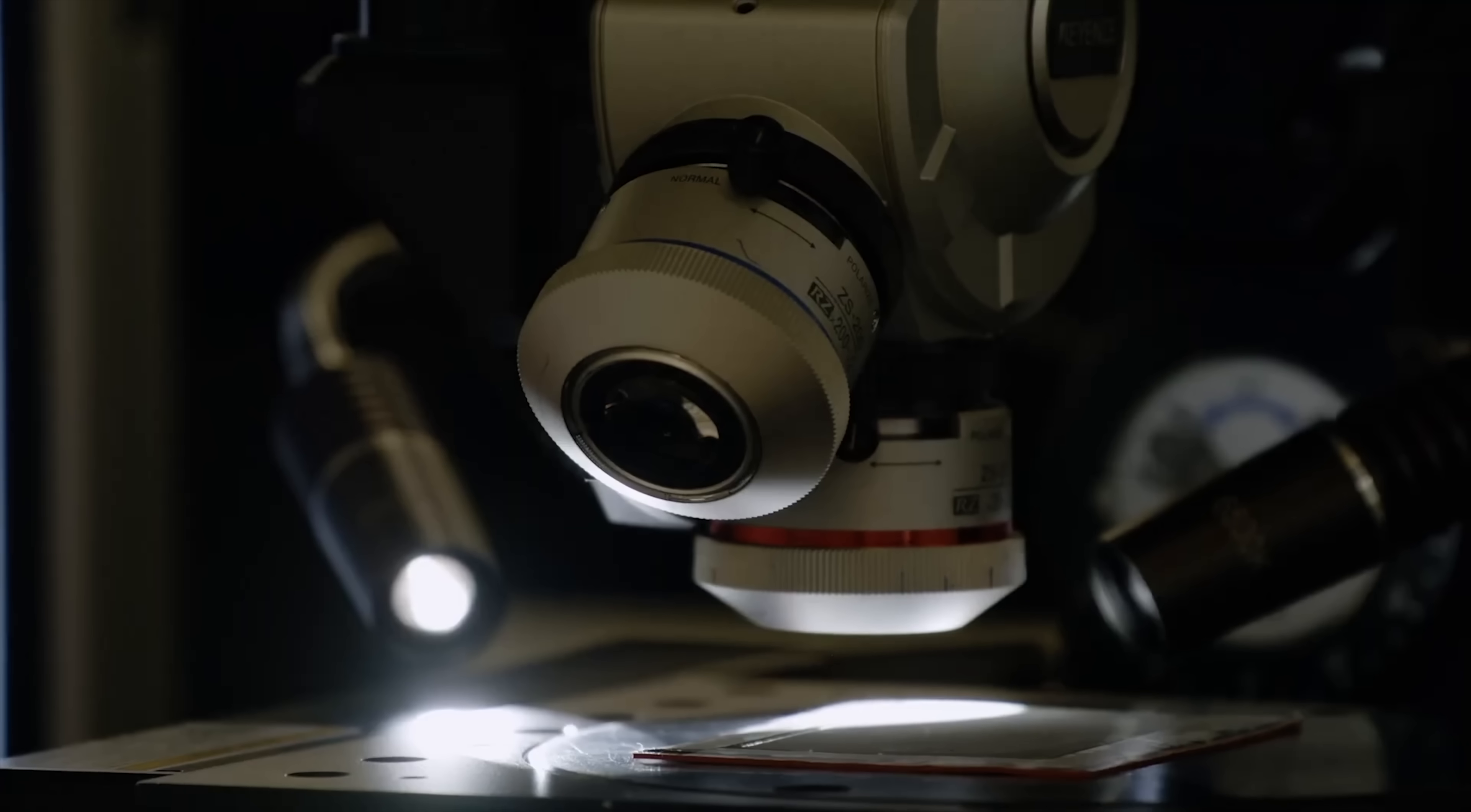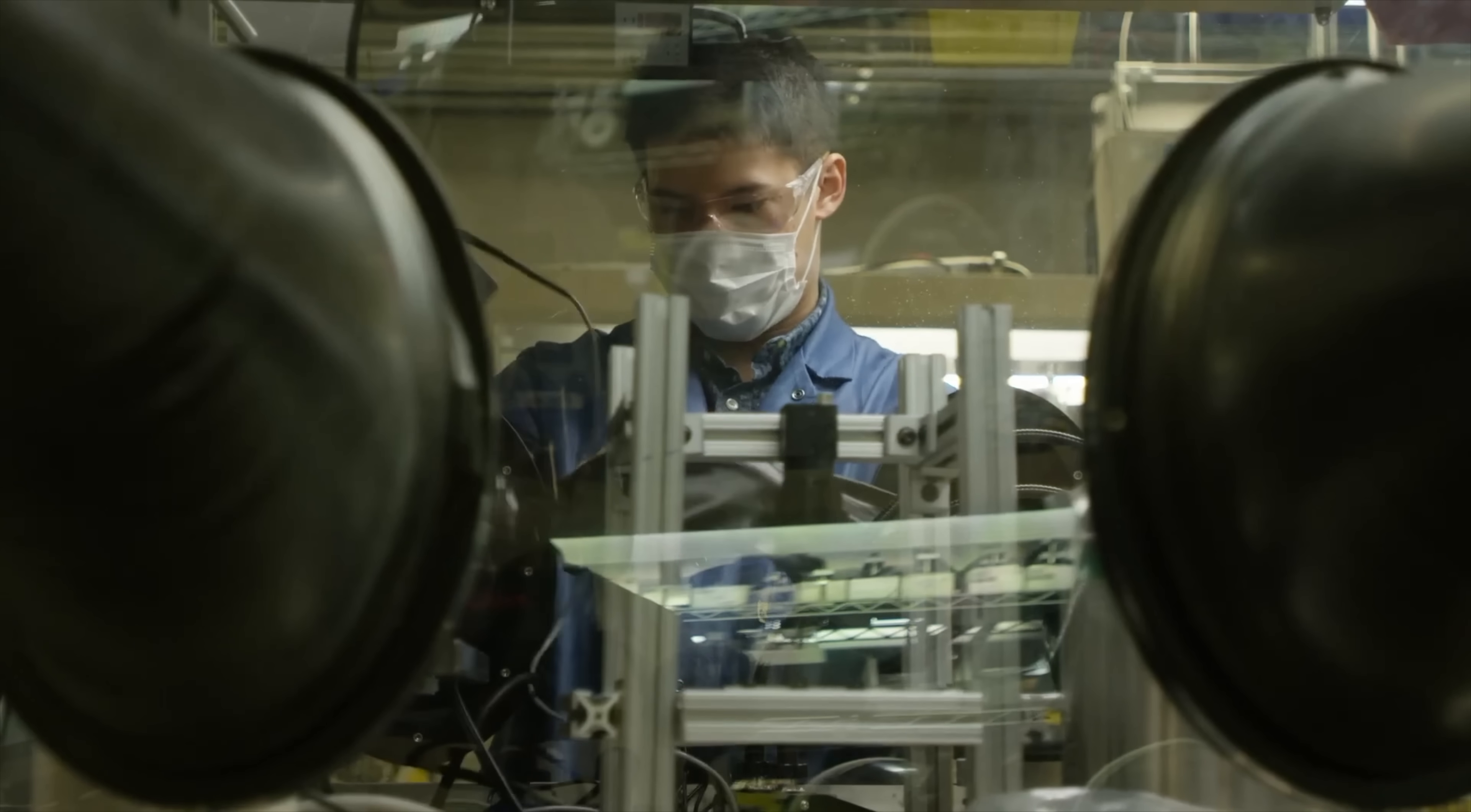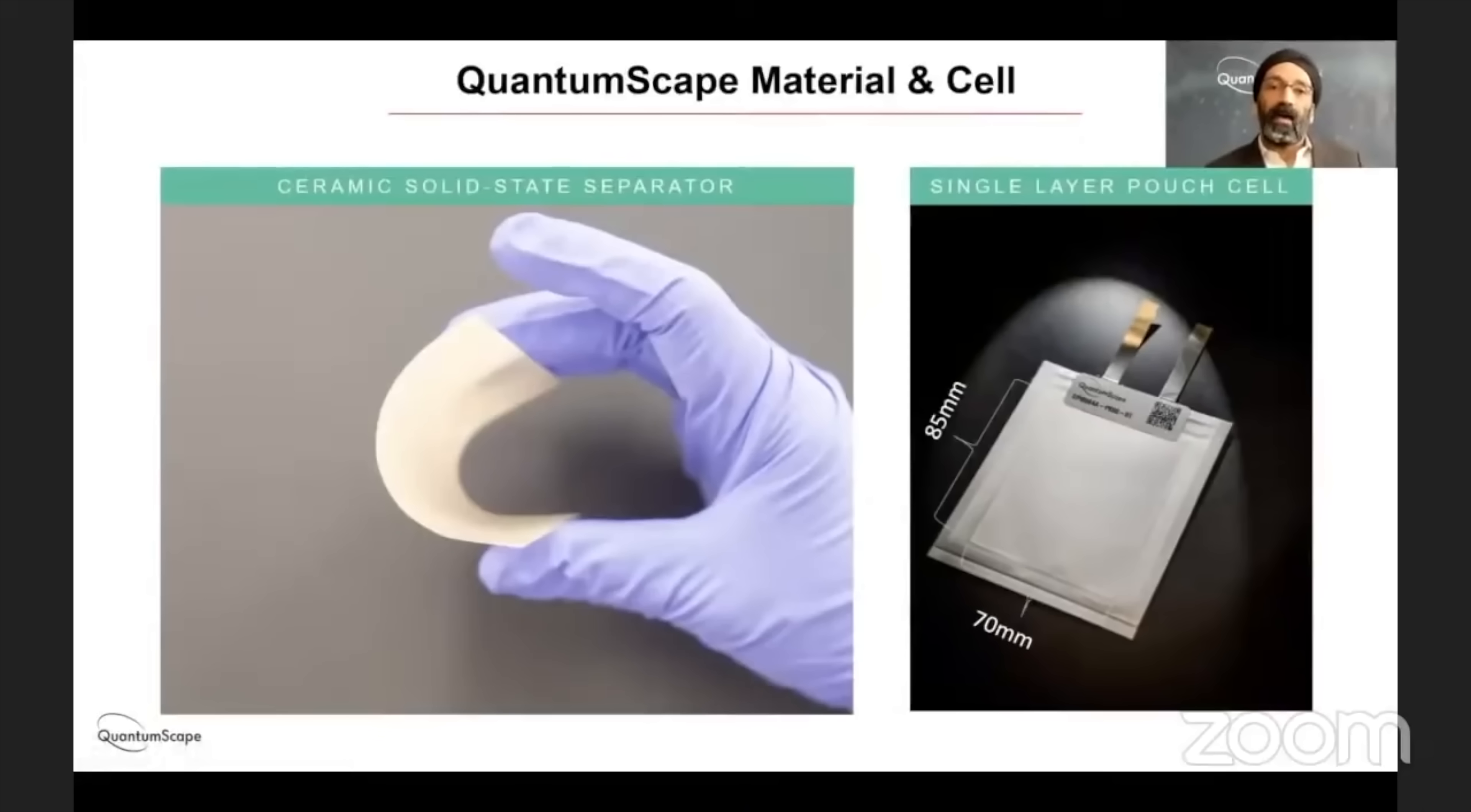During its presentation, don't worry, I'll link to it below, QuantumScape's team detail what they've accomplished, which is an ultra-thin cell design that uses pure lithium at the negative side when the cell is charged, and nickel-manganese-cobalt oxide at the positive side. In between the two, there's a flexible ceramic separator that allows ions to pass freely between the two terminals, but prevents any kind of lithium dendritic build-up.